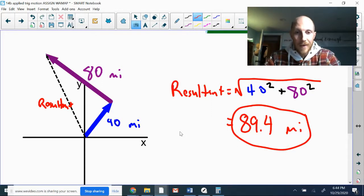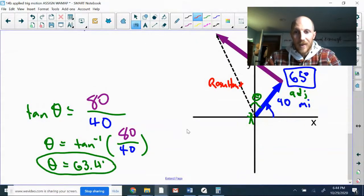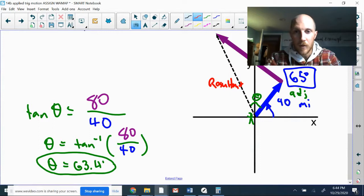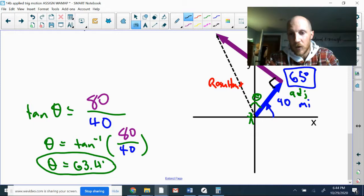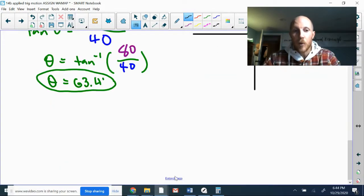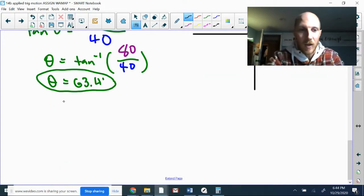Next we're going to find the direction angle specifically. So it's a right triangle, so I can use in this case tangent. I know the opposite and adjacent sides, I need to find that angle. The setup: tangent of the mystery angle is 80 over 40, inverse tangent of that gives me an angle of 63.4 degrees. 63.4 degrees is the inside the triangle angle. That's not my final answer.